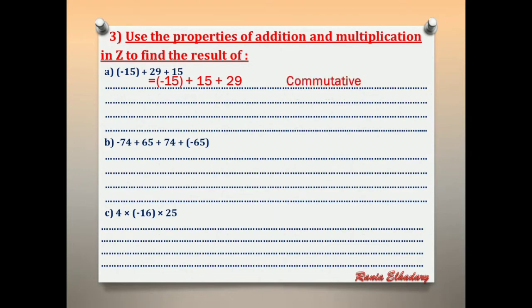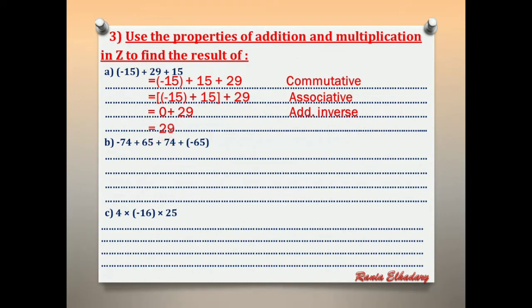Inside the brackets: negative 15 + 15 = 0. This is called additive inverse. Then 0 + 29 = 29. Adding 0 doesn't change the number — this is called additive identity. The answer is 29.